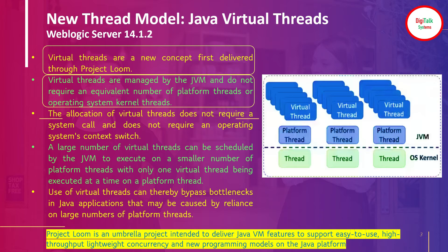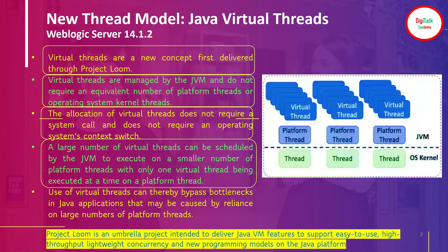The concurrency and performance of your applications are going to be significantly increased with the help of virtual threads. The allocation of a virtual thread does not require a system call and does not require an operating system context switch. Every time an application needed a thread, it had to reach the operating system through context switching — that will not be required with virtual threads because they are managed by the JVM. A large number of virtual threads can be scheduled by the JVM to execute on a smaller number of platform threads, with only one virtual thread executing at a time on a platform thread.